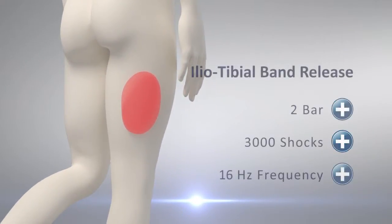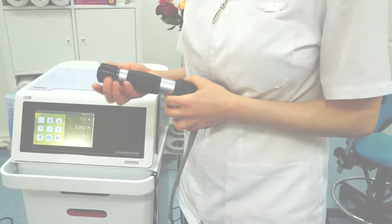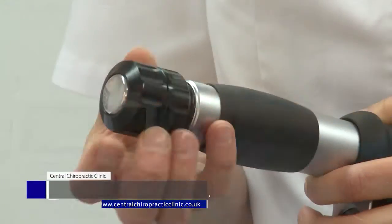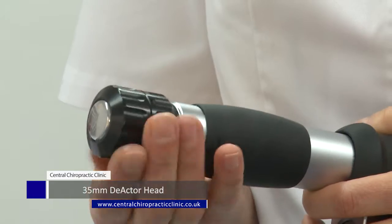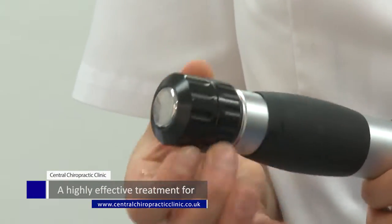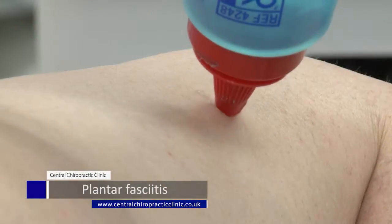Iliotibial band syndrome is a very common and often persistent condition occurring amongst runners, cyclists and hikers. It usually presents as pain on the outside of the knee during or after running, walking or cycling, as well as during rest.